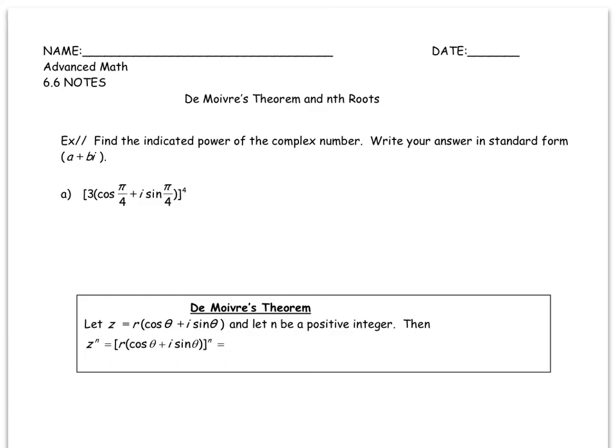So we've already seen how to multiply complex numbers when they're in trig form and divide. And so a natural extension of that is to raise complex numbers to powers, as we see here in this example.